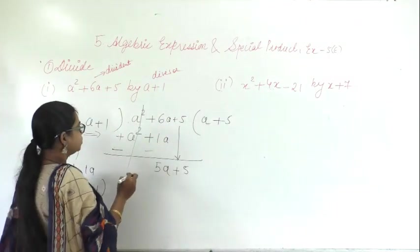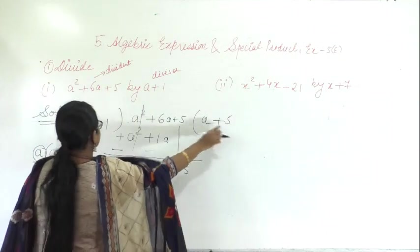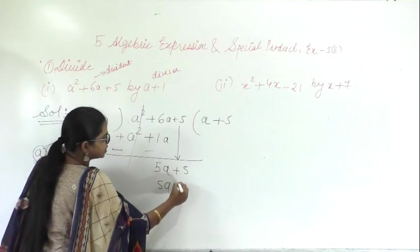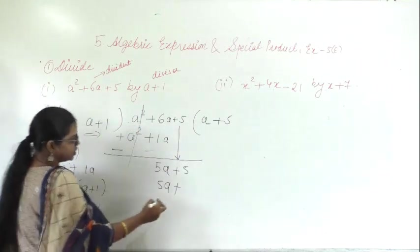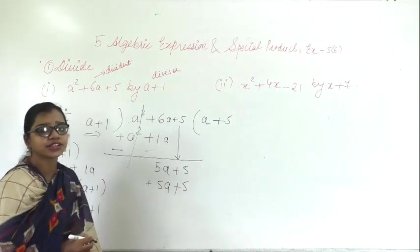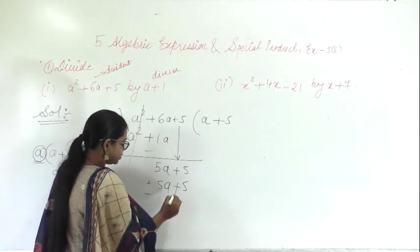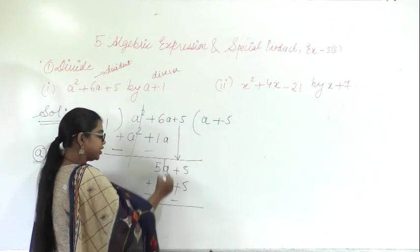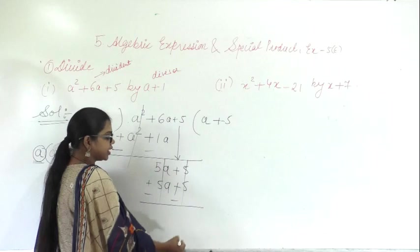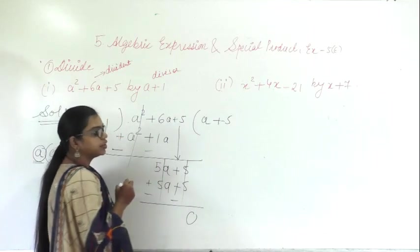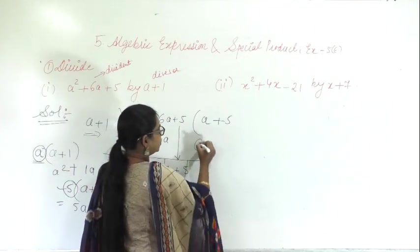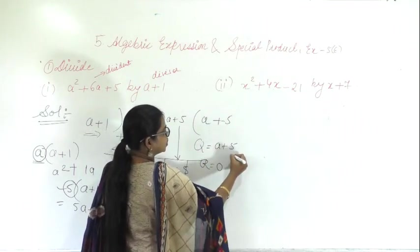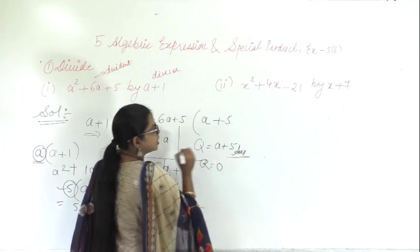So the quotient will be plus 5. If you multiply by plus 5: 5 into a is 5a, plus 5 into 1 is 5. Change the sign — both become negative. Plus 5a minus 5a cancels, plus 5 minus 5 cancels. The remainder is 0. So the quotient is a plus 5 and remainder is 0, making a plus 5 the answer.